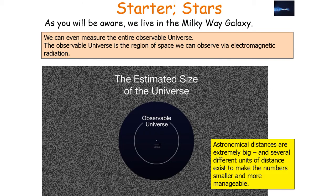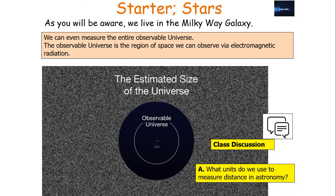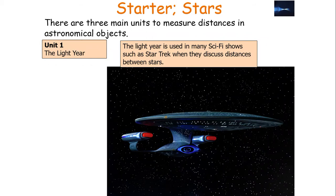Astronomical distances are extremely big, and therefore we've got to use several different units of distance to make these numbers smaller and more manageable. There are three main units used to measure distances in astronomical objects.